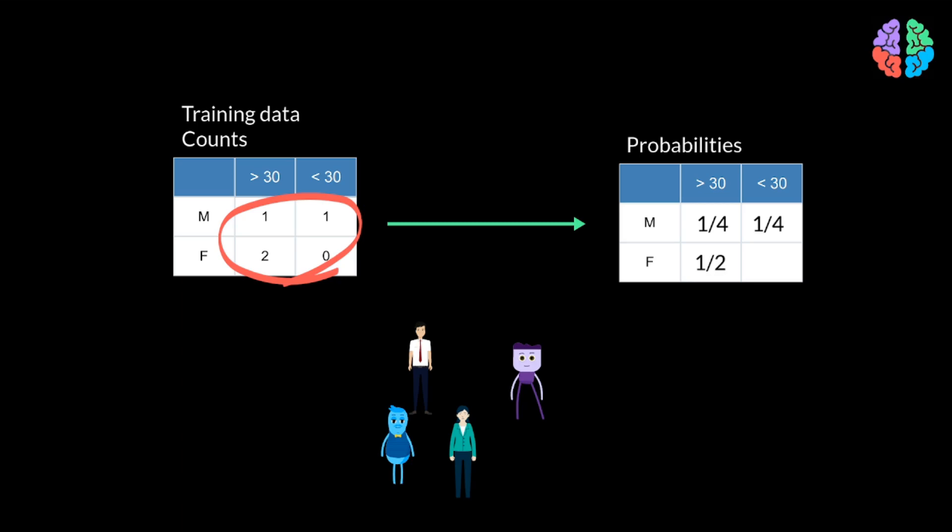Finally, there are no females aged less than 30, and so the probability is 0. This method of calculating the probabilities considering all the samples jointly leads to the joint distribution.